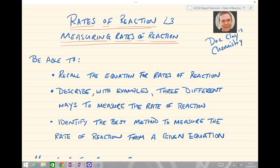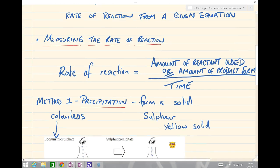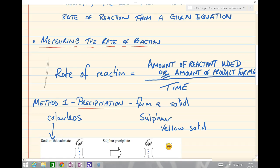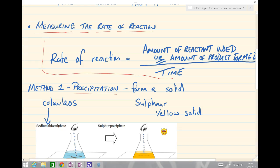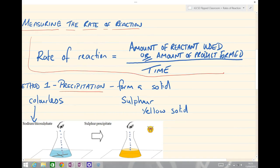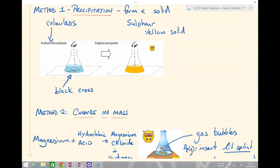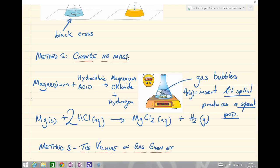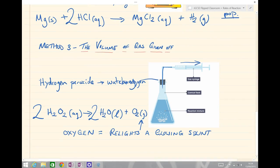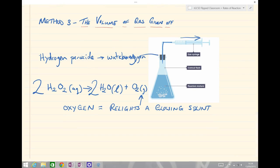Just to recap what we've looked at in today's lesson on measuring rates of reaction: we should be able to recall the equation for rates of reaction—the rate equals the amount of reactant used or amount of product formed divided by the time taken. We then have three different methods: Method 1, precipitation, forming a solid with our example of sodium thiosulfate; Method 2, measuring the change in mass; and Method 3, the volume of gas given off. We'll be looking at all of these practical examples in class over the coming weeks. I'll see you in class. Take care, guys. Thanks for watching.